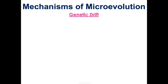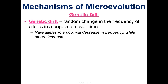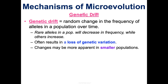Genetic drift is a mechanism of microevolution — it's just a random change in the frequency of alleles in a population over time. Something random just happens and things change. We tend to see that rare alleles decrease in frequency and others increase, and there's often a loss of genetic variation because variation gets wiped out. The changes may be more apparent in smaller populations — the smaller the population, the greater the impact genetic drift could have.